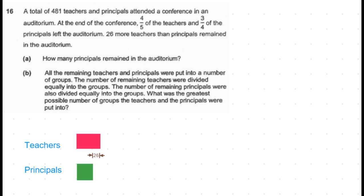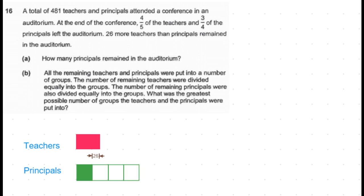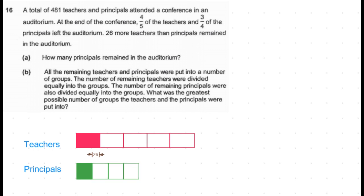This one unit is one-fourth of the principals, which means the total number of principals will be four boxes. Similarly, for the number of teachers, what is remaining is one-fifth of the teachers, so the four-fifths who left will be four more boxes of the same size. Now we can represent the total number of principals and teachers.